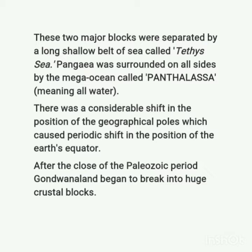When all the continents were united as Pangaea, there was a huge water body surrounding it named Panthalassa, which means 'all water.' After the drift took place and the blocks divided into two parts, a water body formed in between the two — and it was named Tethys. There was also a considerable shift in the position of the geographical poles, which caused a periodic shift in the position of Earth's equator. After the close of the Palaeozoic period, Gondwana land began to break into huge crustal blocks.